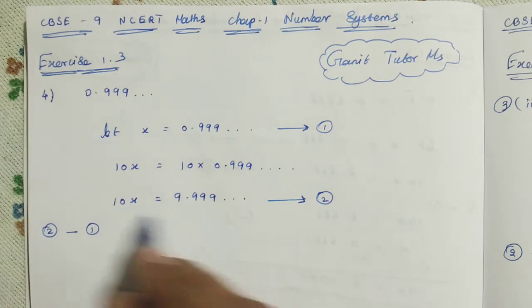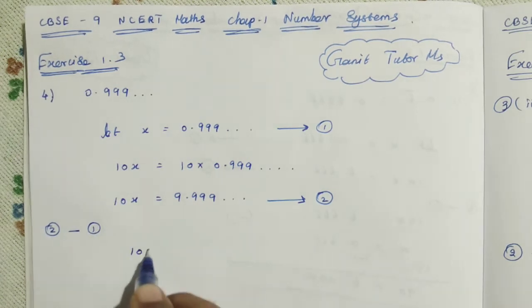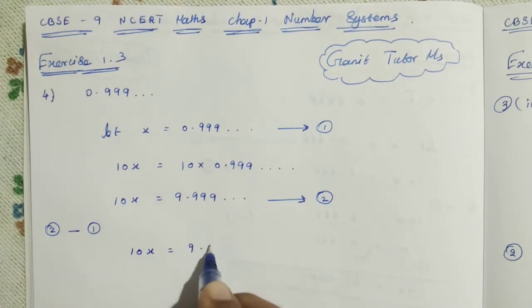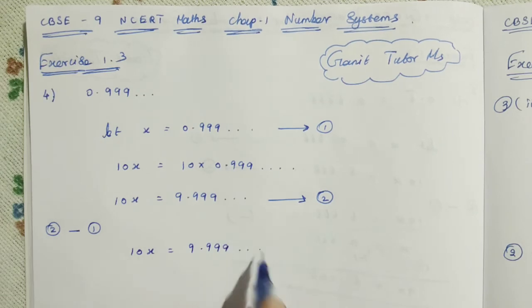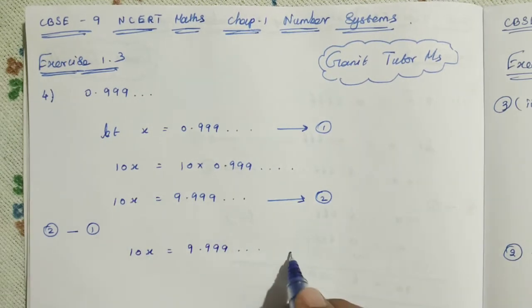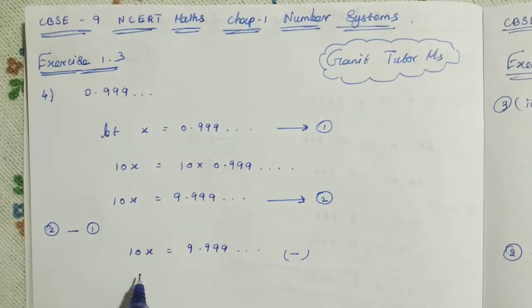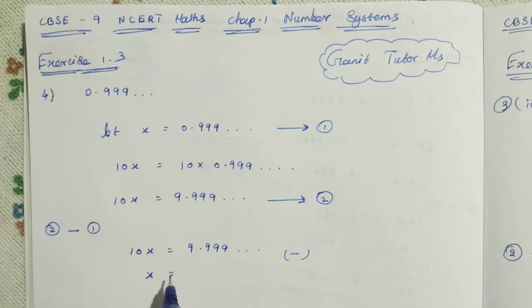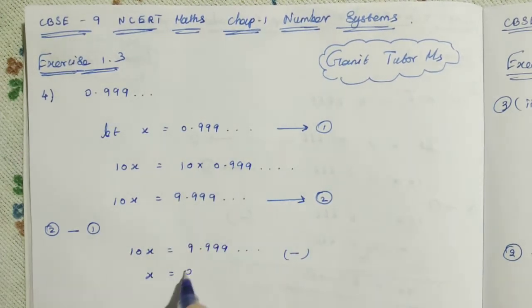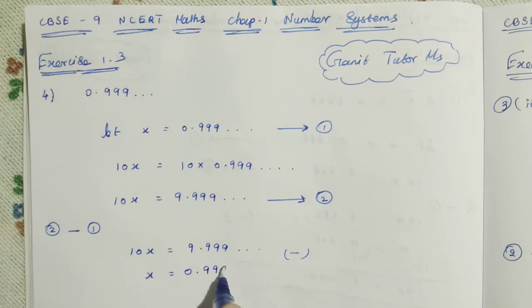Now, you can subtract equation 2 minus equation 1. You just subtract equation 1 from equation 2. So, what is equation number 2? First, you can write equation number 2: 10X is equal to 9.999, etc. Then, you can subtract equation number 1. That is X equal to 0.999, etc.